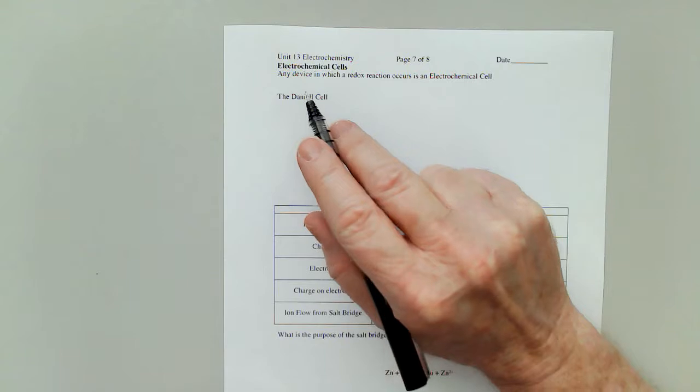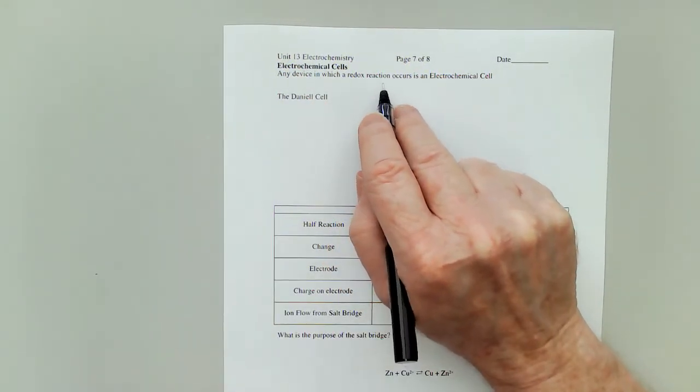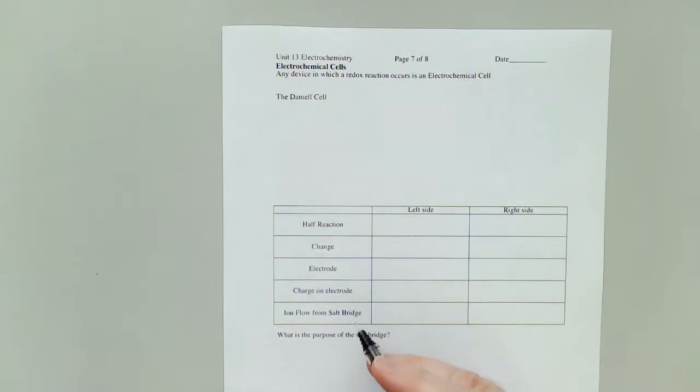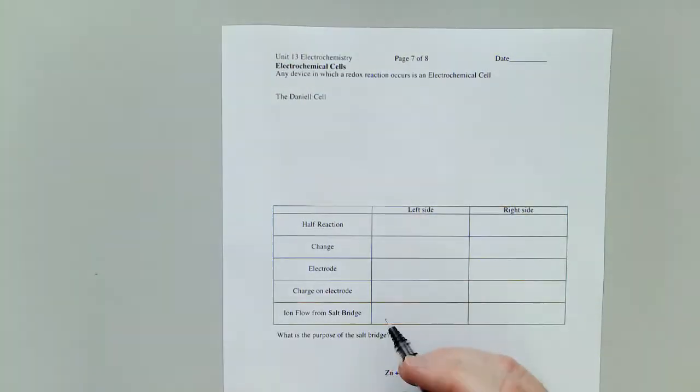So an electrochemical cell is any device in which a redox reaction occurs. And the very first one historically that we talked about is called the Daniell cell.